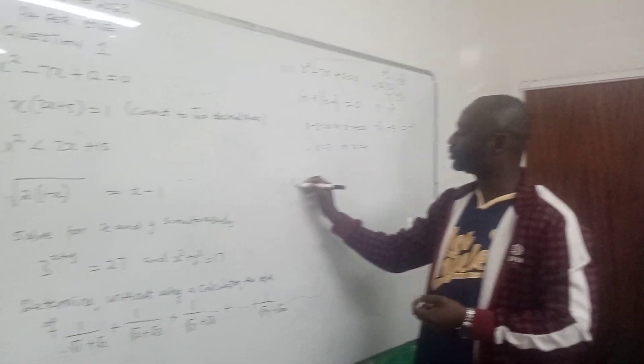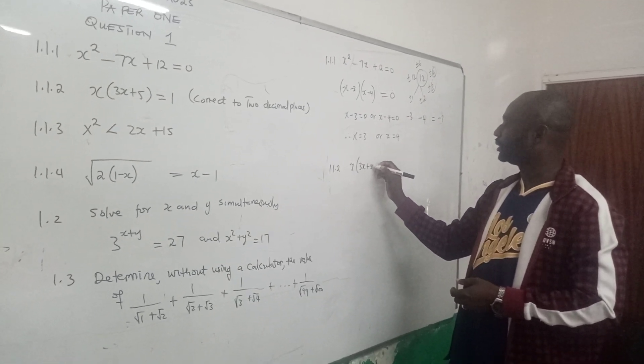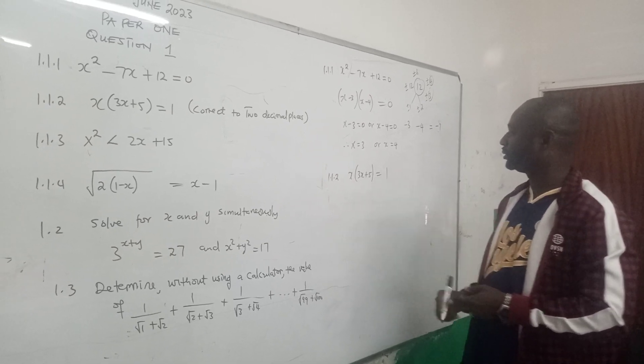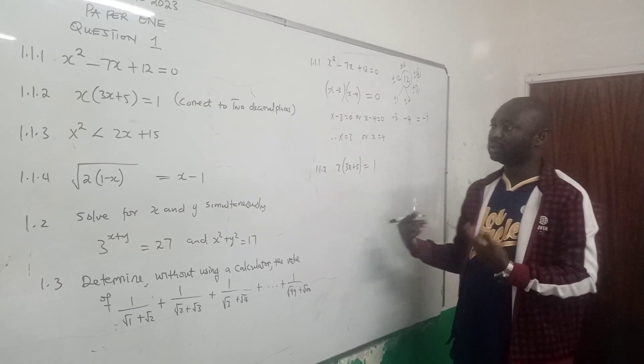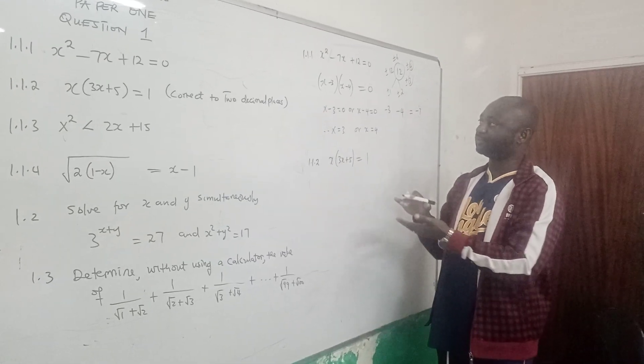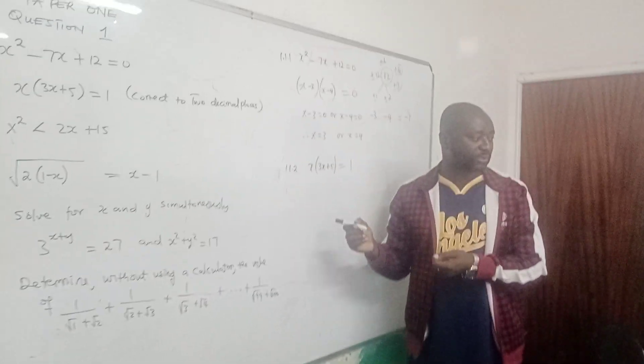So 1.1.2, they say solve for x again, x into bracket 3x plus 5 equals to 1. In this case, they say correct to two decimal places. So here you don't have any right to use the bracket method. Here you are restricted. You need to use the quadratic formula.